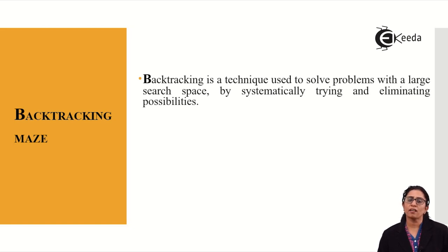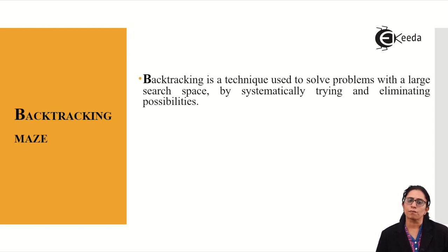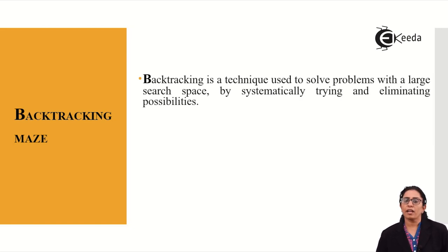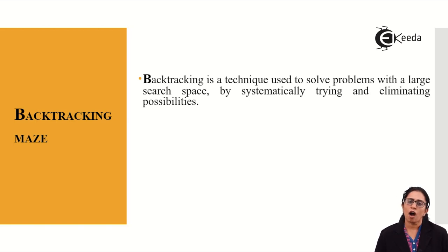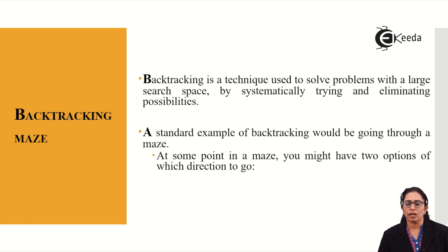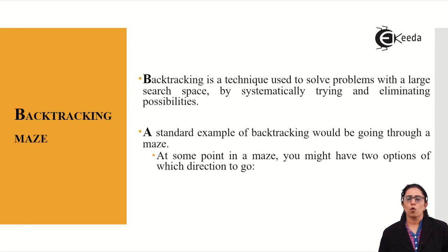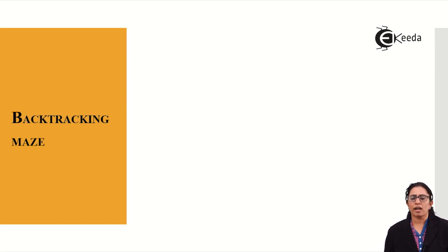We do backtracking where we know that in a systematic manner I can get a possible solution, and if that choice of solutions is not perfect and leads to failure, then we retract them so that we get a successful output. A standard example of backtracking would be going through a maze.